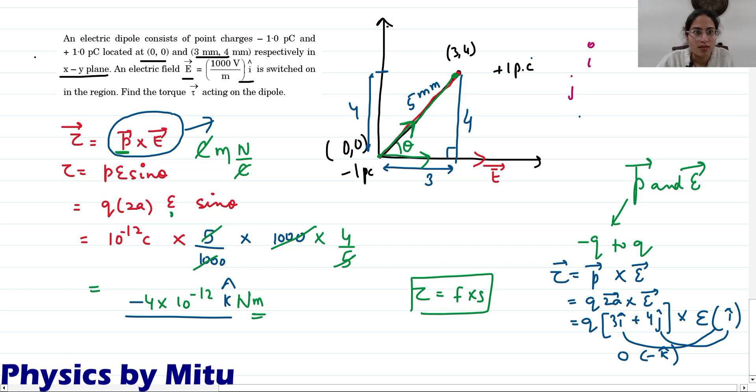Further you can write it in this order: i cross j is k, j cross k is i cap, and k cross i is j cap. If you go in reverse order then it becomes negative. We have gone reverse here - j cross i - which is minus k.